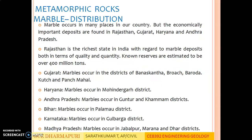Distribution of marble: Marble occurs in many places in our country, but the economically important deposits are found in Rajasthan, Gujarat, Haryana and Andhra Pradesh. Rajasthan is the richest state in India with regard to marble deposits, both in terms of quality and quantity. Known reserves are estimated to be over 400 million tonnes. Various districts in the state which have more marble distributions are given here. Other states include Gujarat, Haryana, Andhra Pradesh, Bihar, Karnataka and Madhya Pradesh, with their respective districts also given.